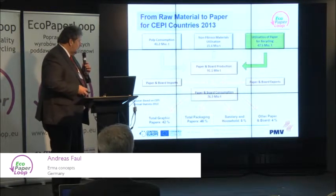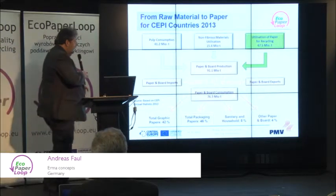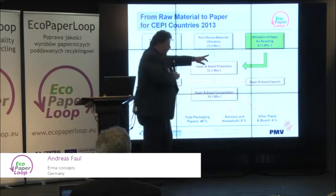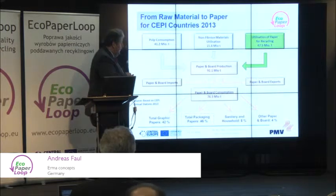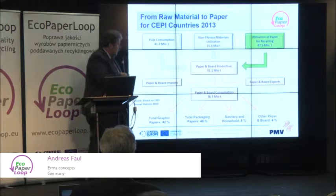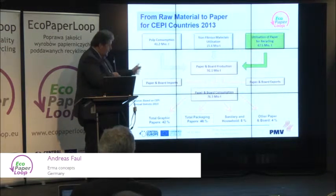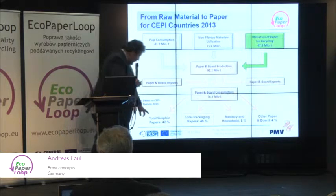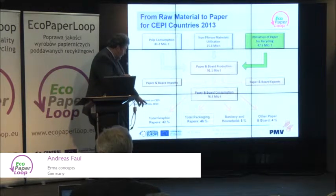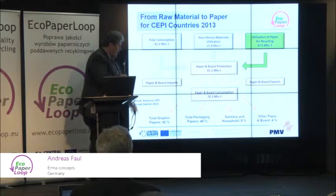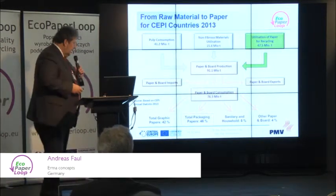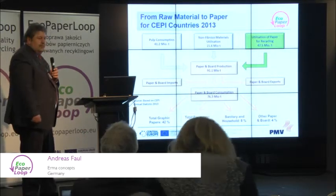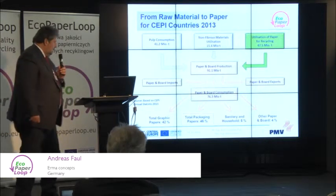When you look at the material flows in paper production, we have virgin pulp, we have non-fibrous material, we have paper for recycling, which is the highest figure of all, resulting in a production in 2013 of 91 million tons. In the CP countries, you have imports and exports, resulting in a consumption of 76, and that means 42% of that consumption is graphic paper, 46% packaging, and the smaller ones are sanitary household and other. So the packaging papers are the biggest group, and when you remember this gloomy outlook from Johannes Kappen, that will even be more in the future.